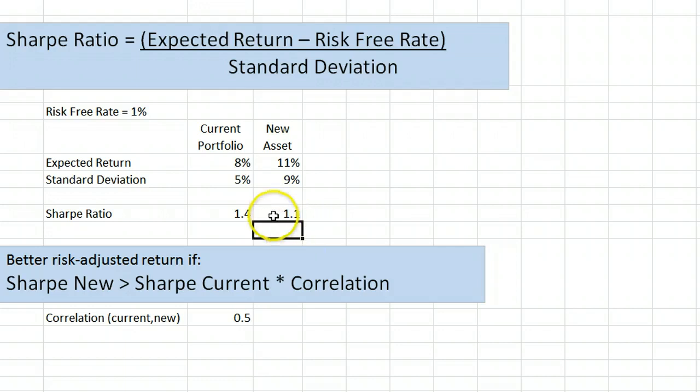Although this is a worse risk-adjusted return than in our current portfolio, it's still possible that this new asset will improve the portfolio through diversification. To check, we use this formula here, which says that the Sharpe Ratio of the new asset must exceed the Sharpe Ratio of the current portfolio multiplied by the correlation between the portfolio and the new asset.